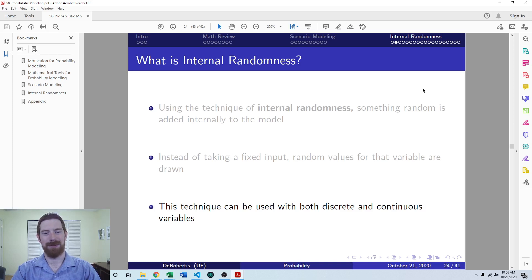That distribution can be for discrete or continuous variable. As we covered in the math review, a continuous distribution is going to be defined by a function and a curve, whereas a discrete is going to be defined by a table of the probabilities.